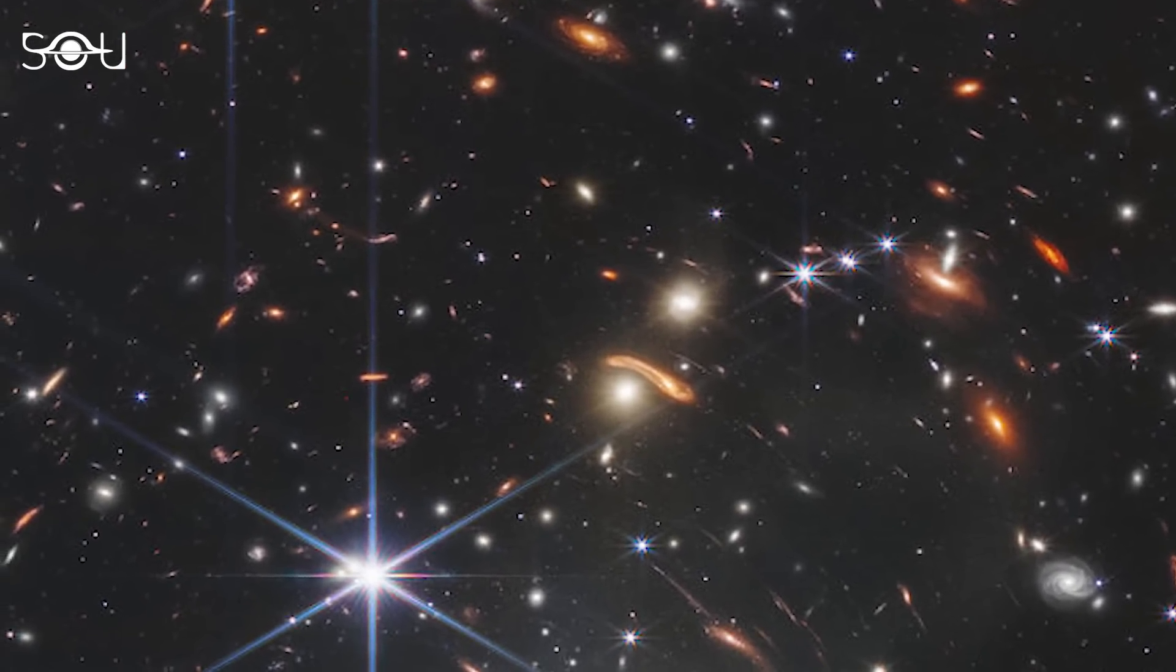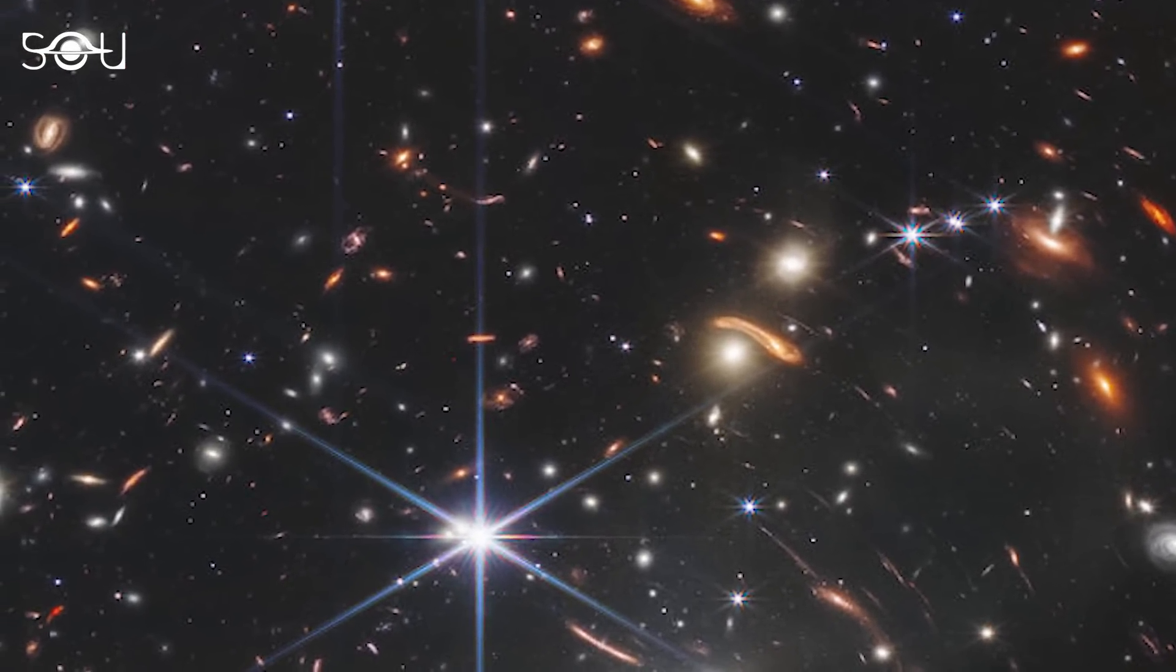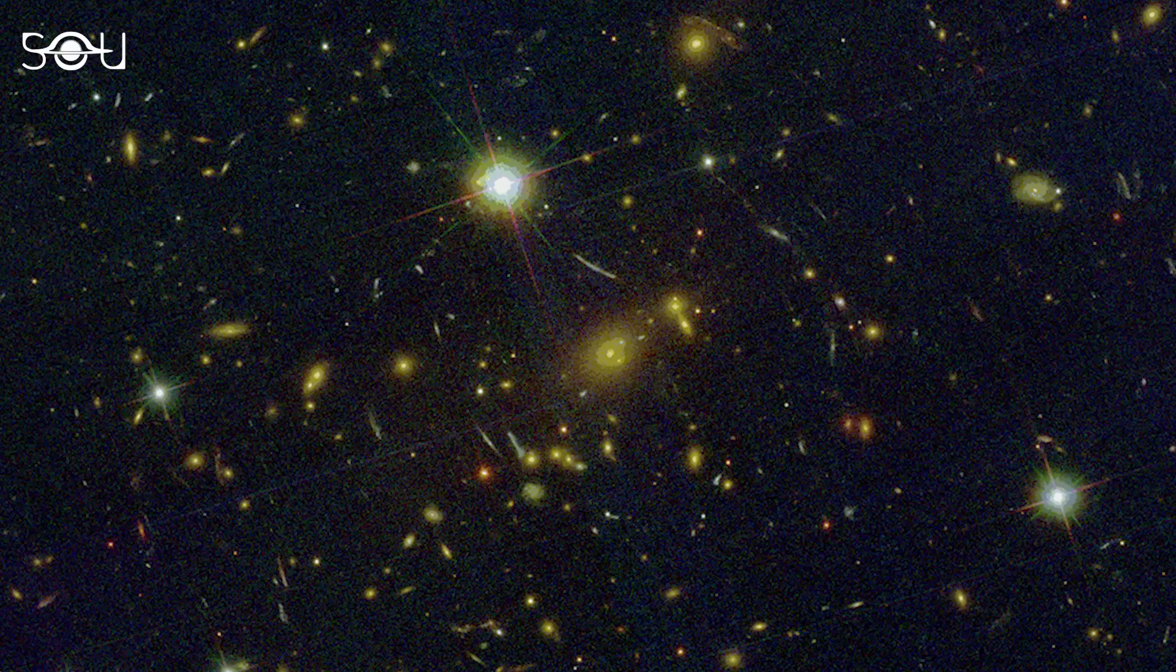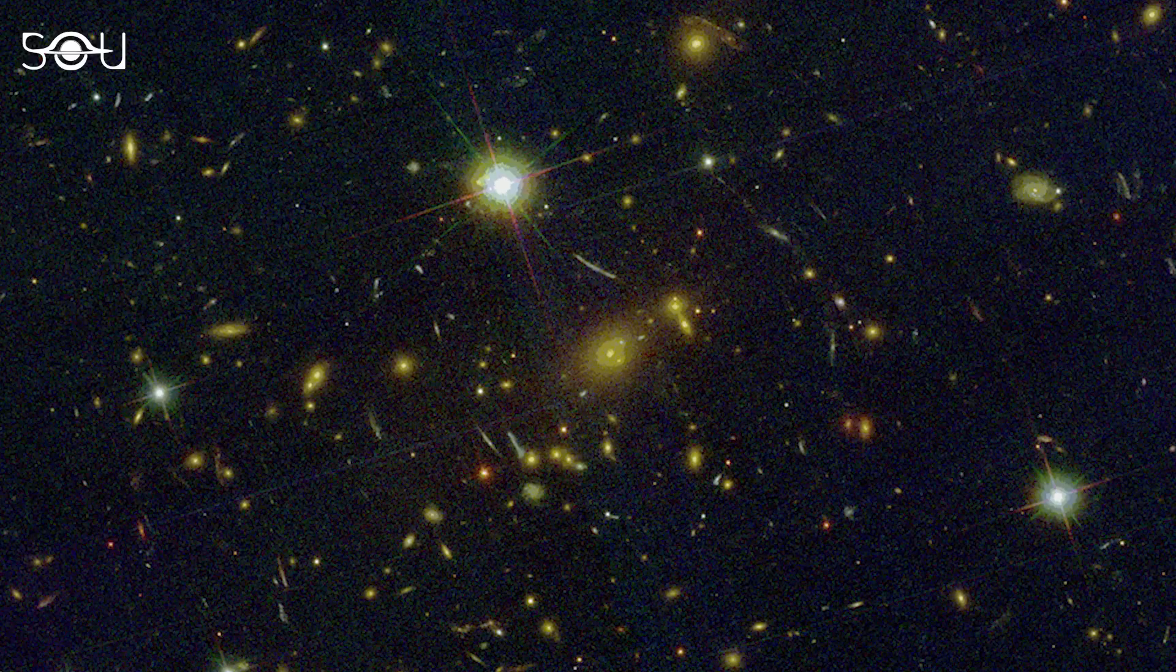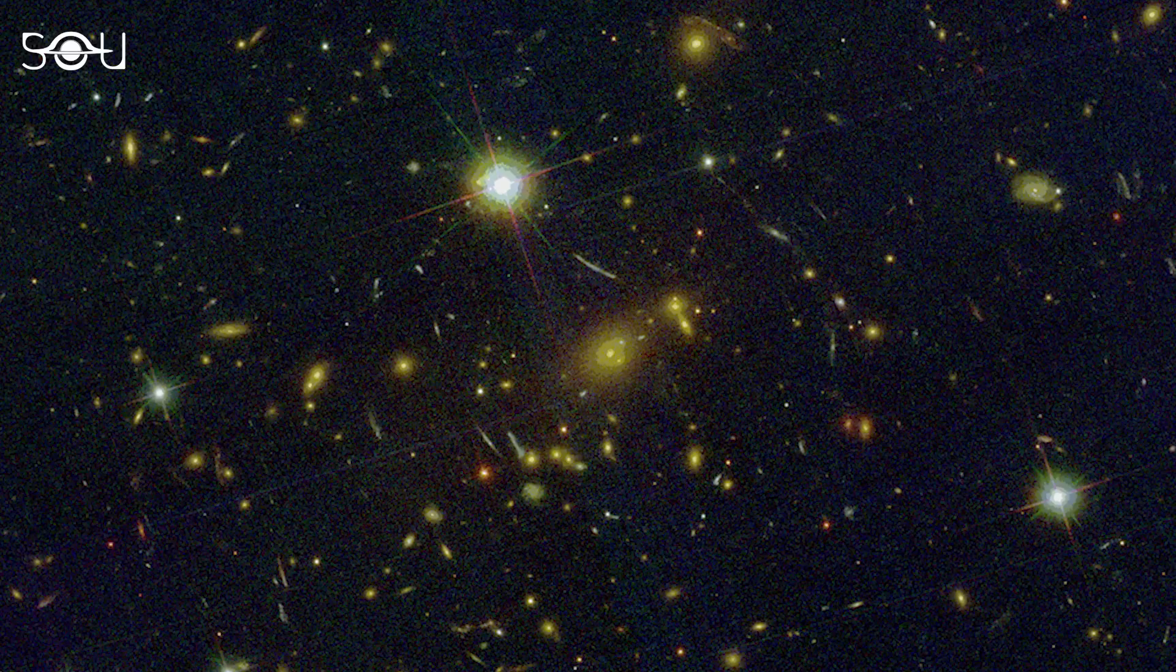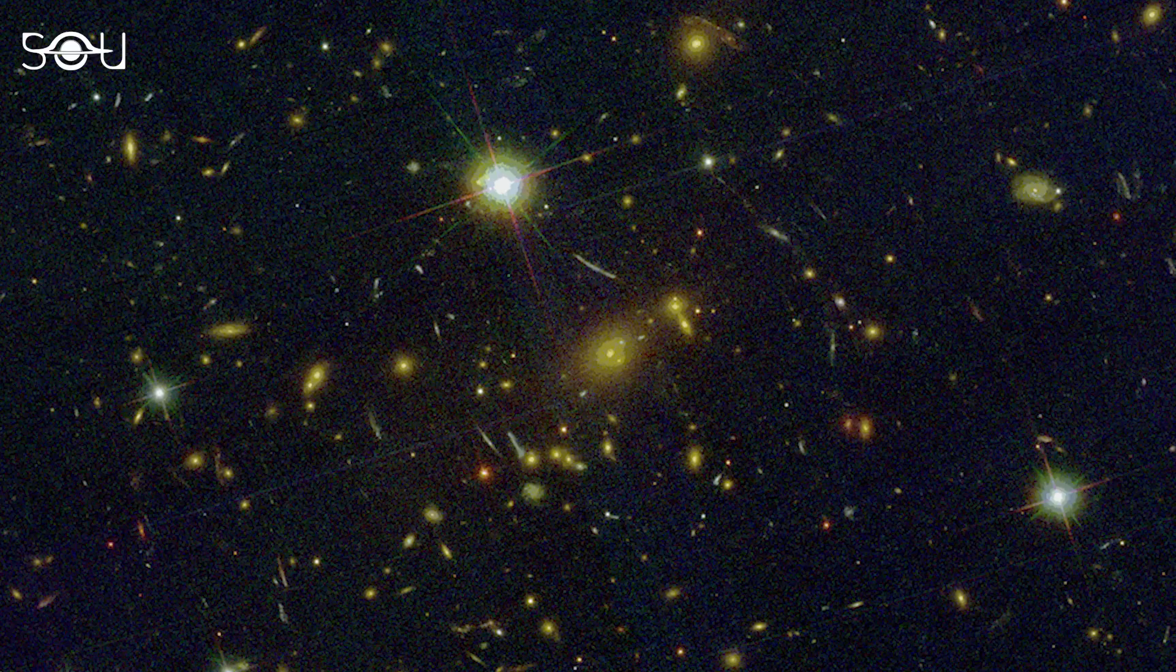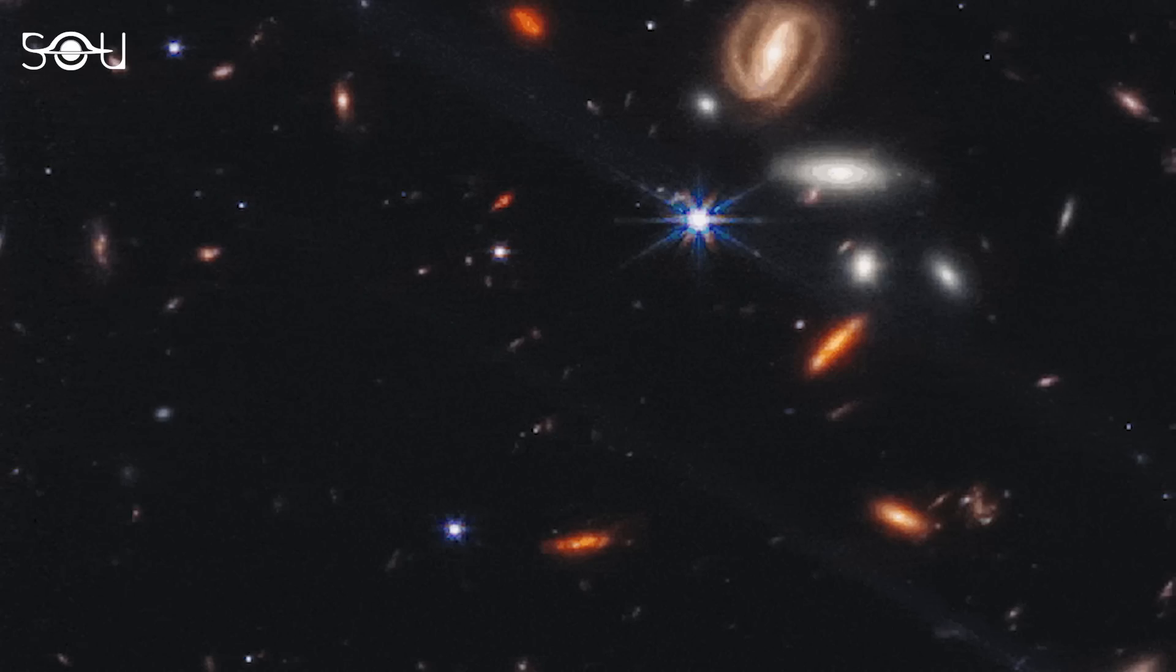We can see similarly amazing details all over the deep field. For point-like objects, Webb is expected to be beyond 100 times more sensitive than Hubble. In the background, faint red galaxies appear scattered all over.